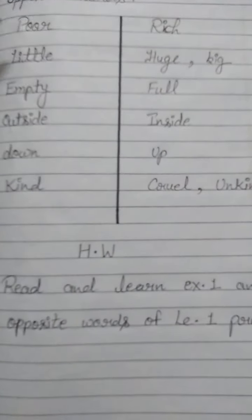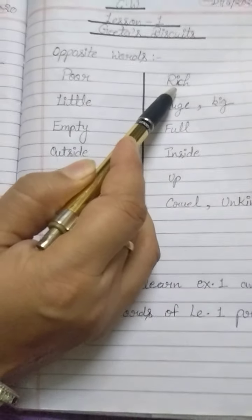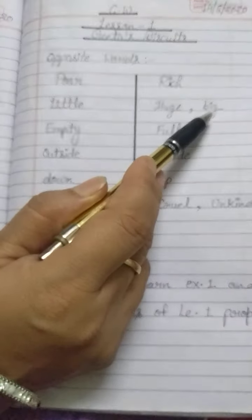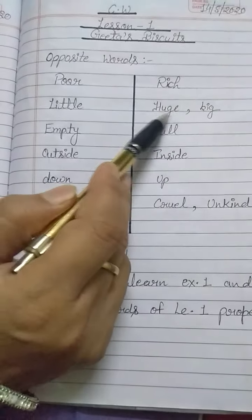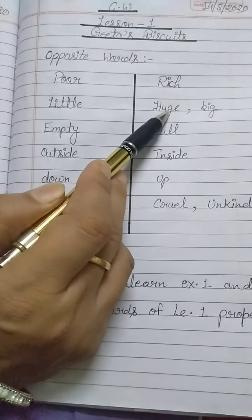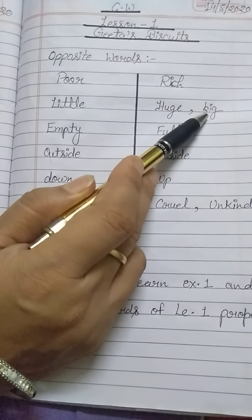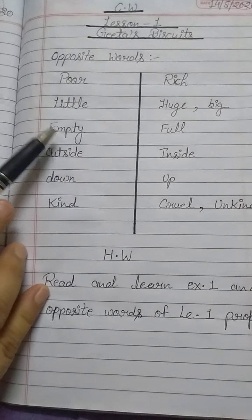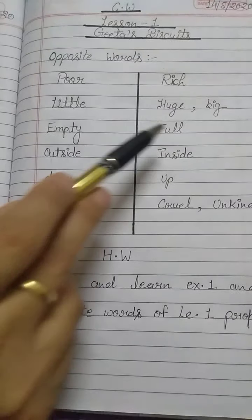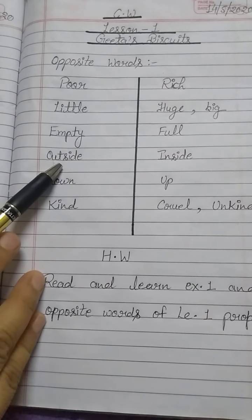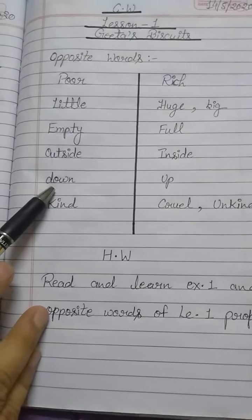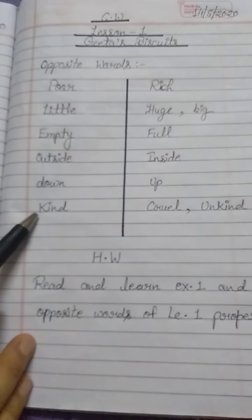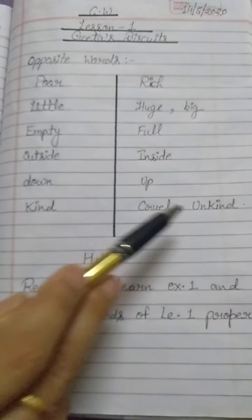Let's repeat. Poor — what is the opposite word of poor? Rich. Little — what is the opposite word of little? Huge or big. Here we have two words. Empty — what is the opposite word of empty? Full. Outside — inside. Down — what is the opposite word of down? Up. Kind — what is the opposite word of kind? Cruel or unkind. Here are two words also.